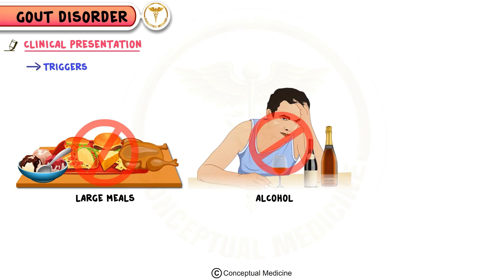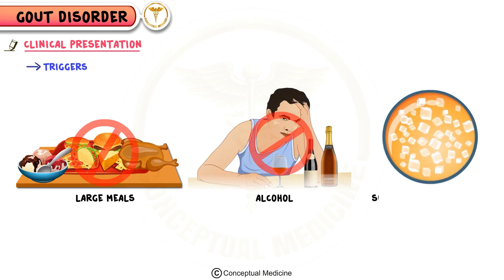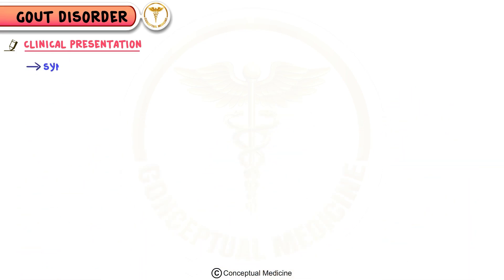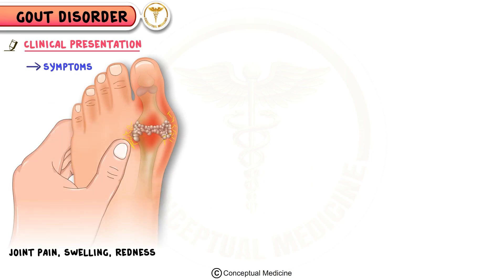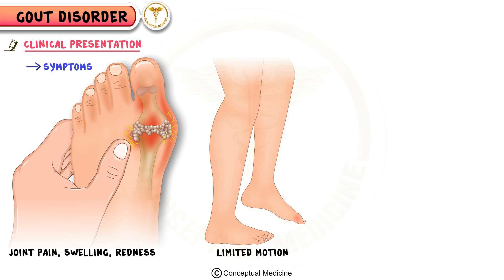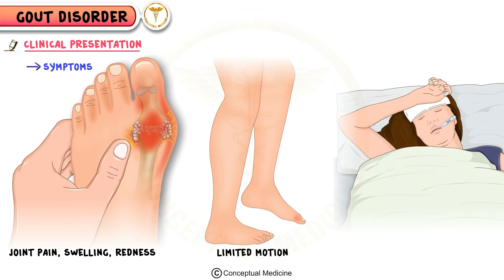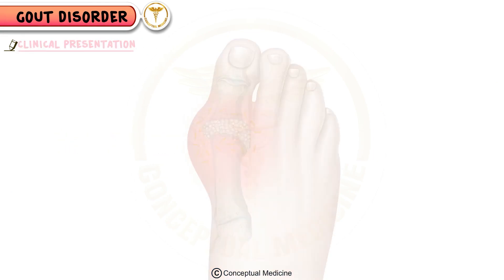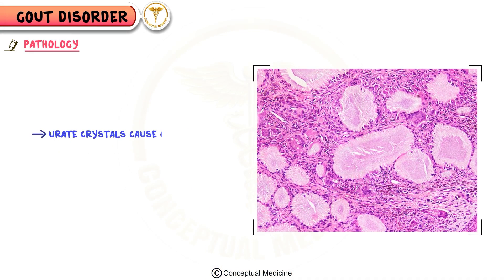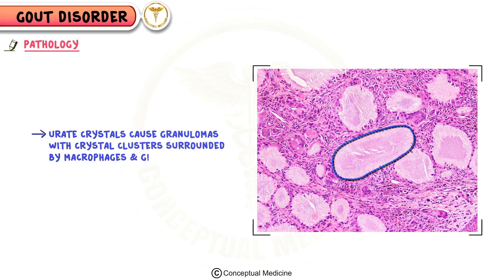Symptoms involve sharp joint pain, swelling, redness, and limited motion, sometimes with fever. Chronic cases show tophi around joints and tendons. Pathologically, urate crystals cause granulomas with crystal clusters surrounded by macrophages and giant cells.